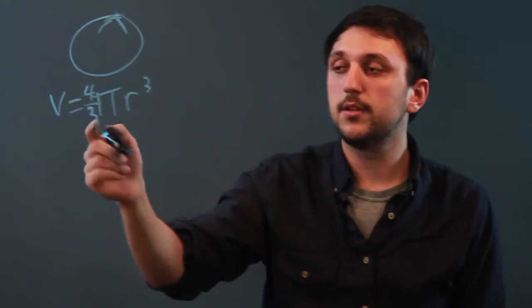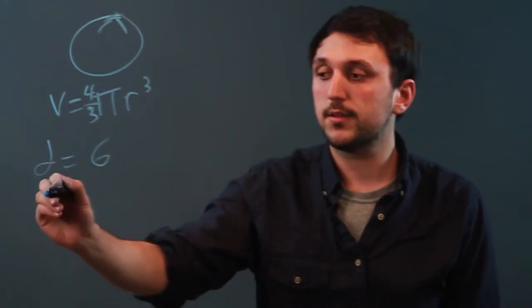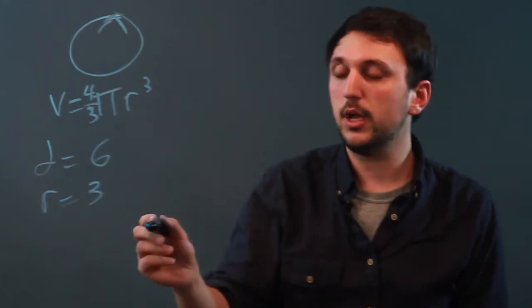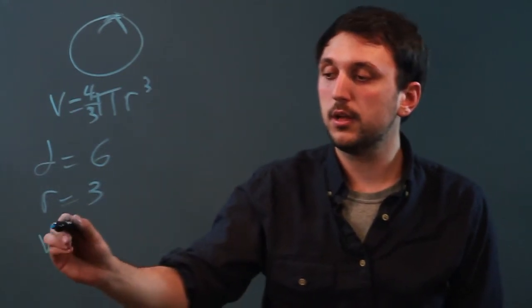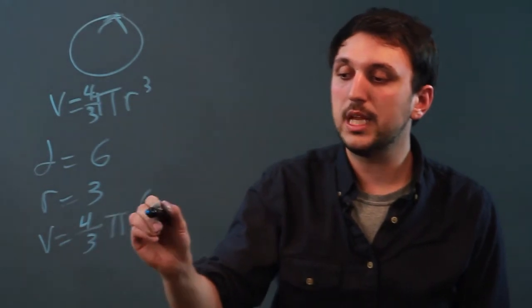And let's pretend our diameter is 6. Now if our diameter is 6, that means our radius is 3. So then we plug that back into the equation and we say volume equals four-thirds pi 3 cubed.